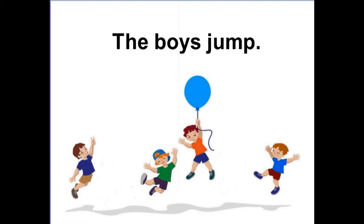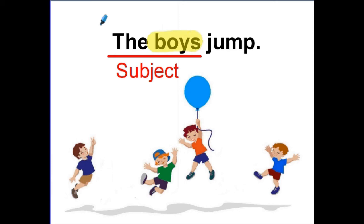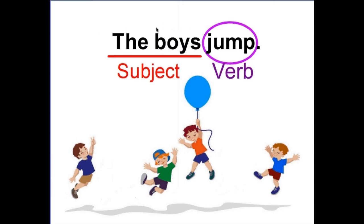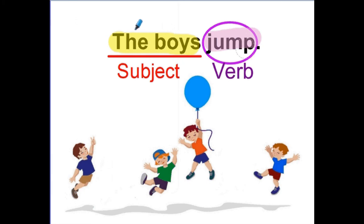Now read the sentence with me: 'The boys jump.' The subject of this sentence names more than one. 'Boys' is a plural noun, and 'jump' is a plural verb. The verb 'jump' doesn't have an S at the end. So we have a plural noun and a plural verb — our subject and verb agree with each other. When a noun subject names more than one, you don't add an S to the verb.